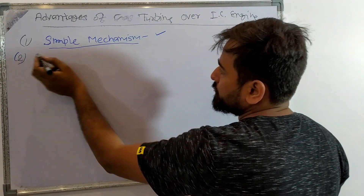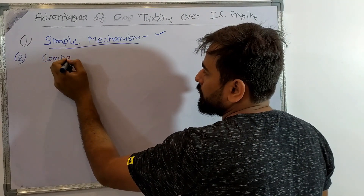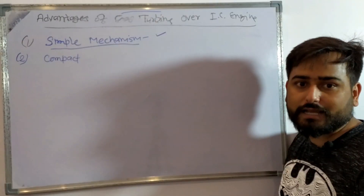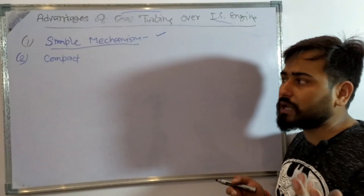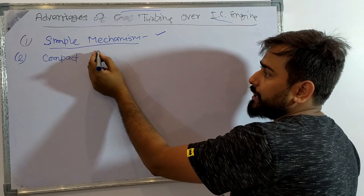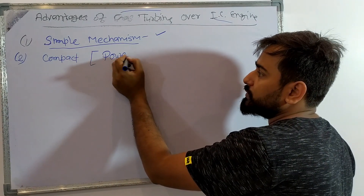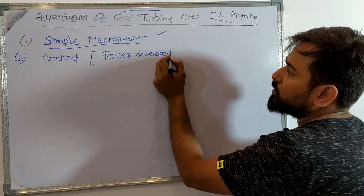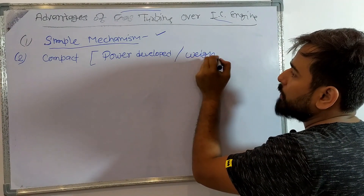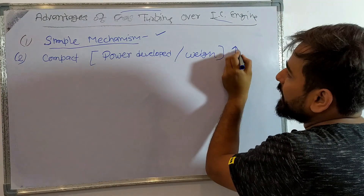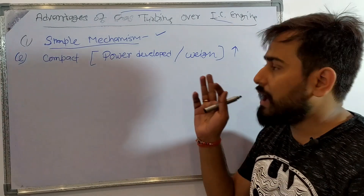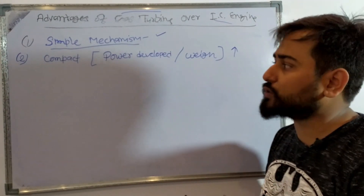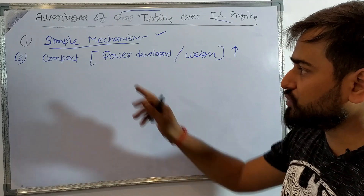The second advantage is compact — Gas Turbine is compact. You might think that the gas turbine is big, so how is it compact? The key point is: when we compare compactness, we look at the power developed per unit weight. The power developed per unit weight is more for the gas turbine. The IC engine is small, but the power developed per unit weight is less than the gas turbine.